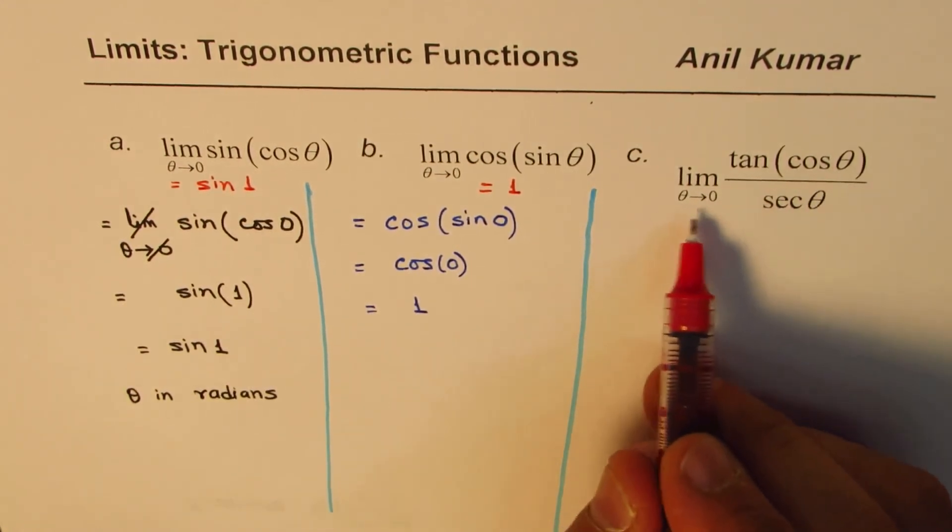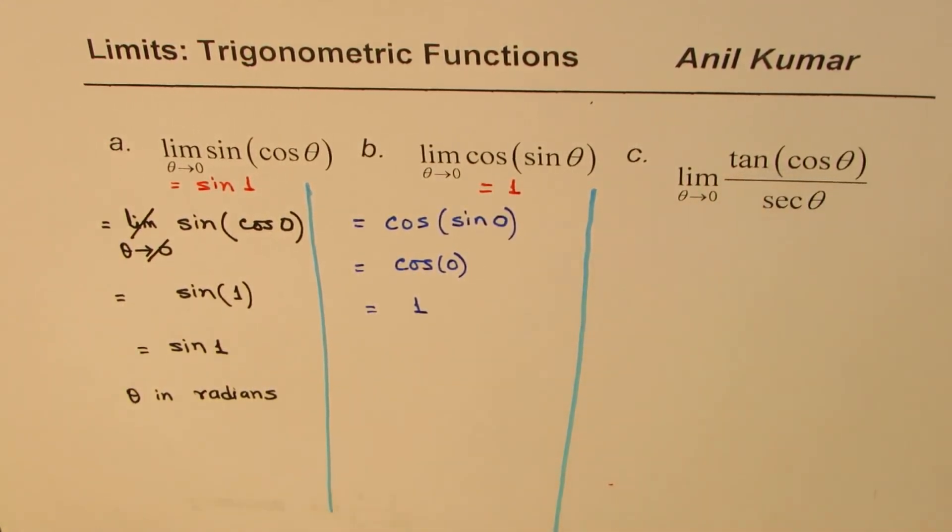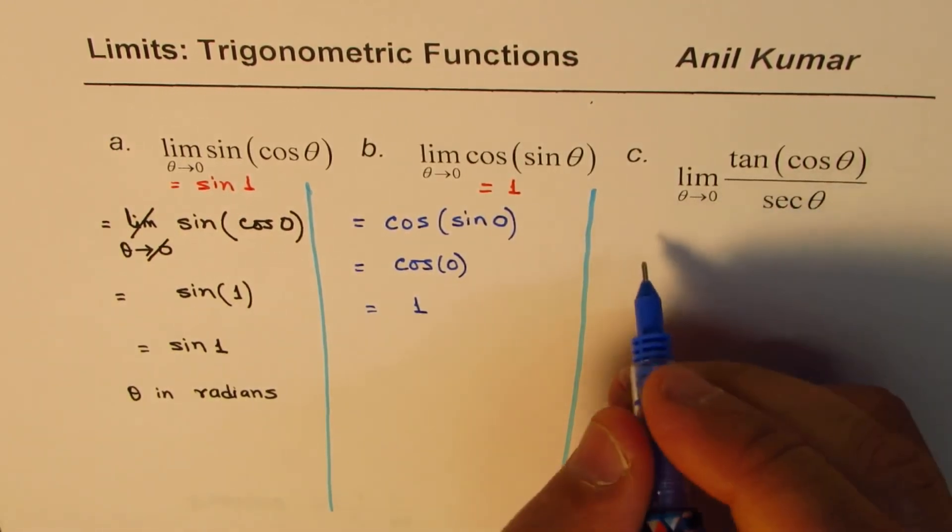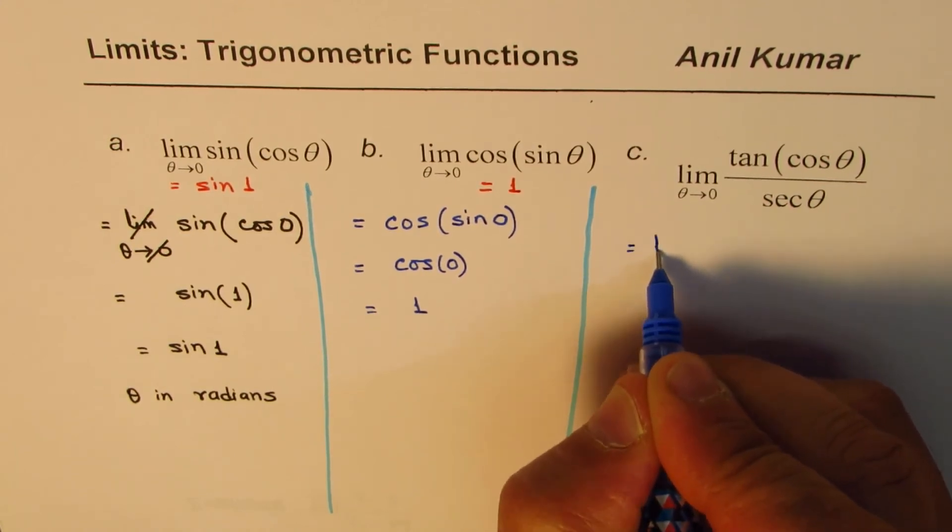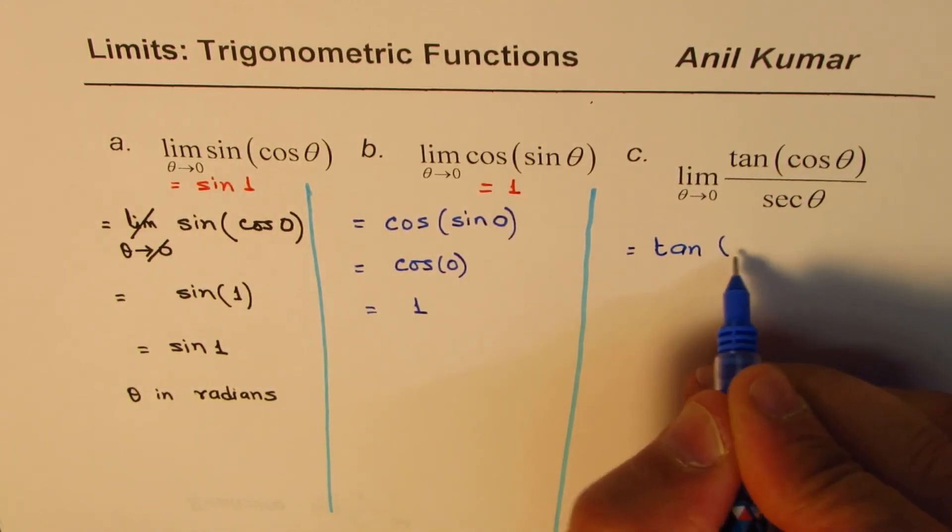Again, we'll substitute theta equals 0. So if I do that, what do I get? I get tan cos of 0.